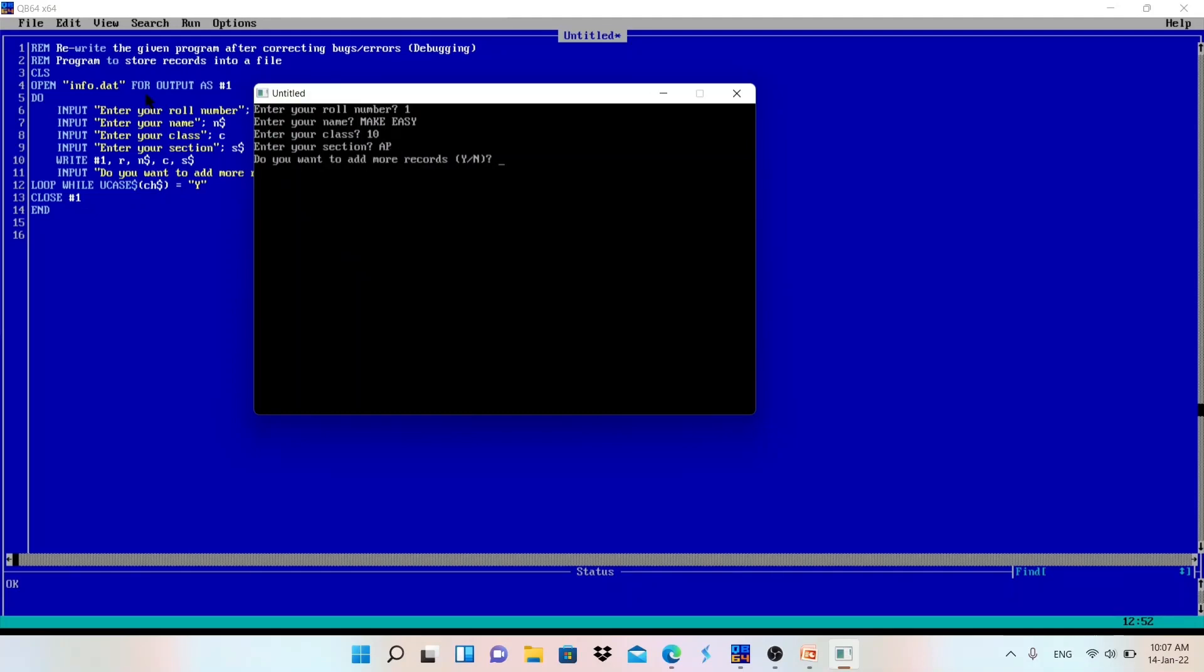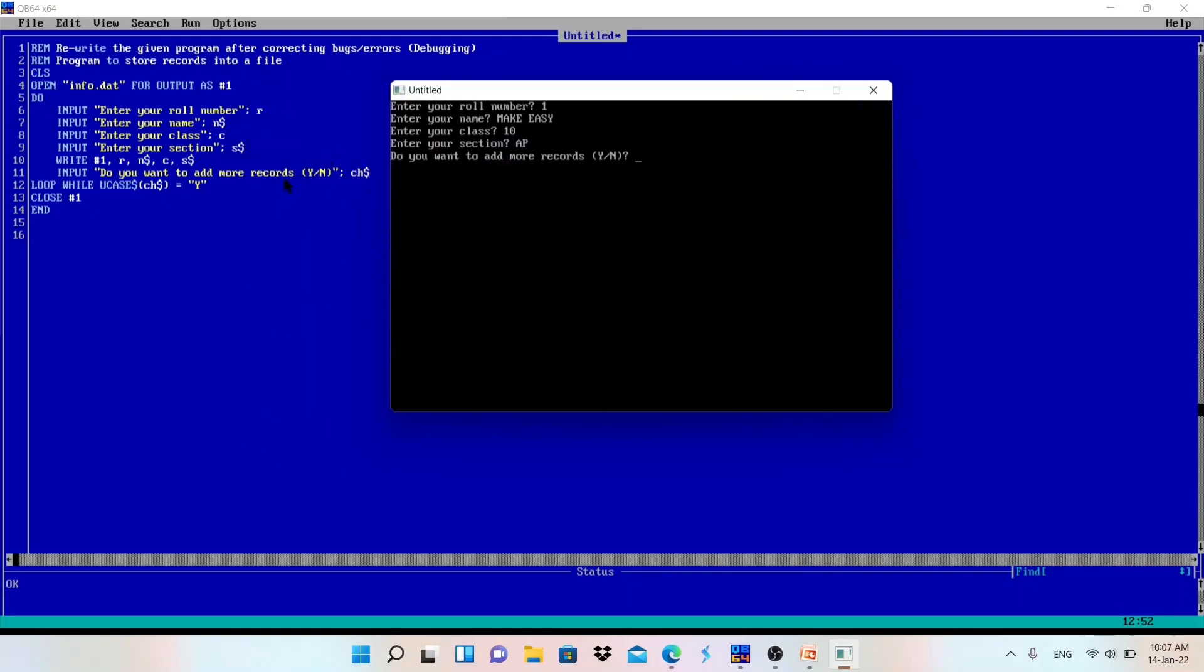And section A, CAP. So after entering the data, it is asking whether you want to continue or not. So I will press yes, I want to continue. Again it is asking roll number 2, name, and then class. Again I will enter 10, section.